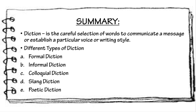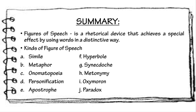Next, what is diction? Diction is the careful selection of words to communicate a message or establish a particular voice or writing style. The different types of diction are formal, informal, colloquial, slang, and poetic. Next, we have the figures of speech — a rhetorical device that achieves a special effect by using words in a distinctive way. The kinds of figure of speech are simile, metaphor, onomatopoeia, personification, apostrophe, hyperbole, synecdoche, metonymy, oxymoron, and paradox.